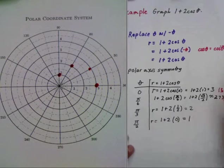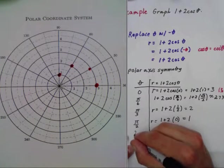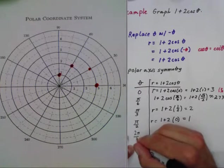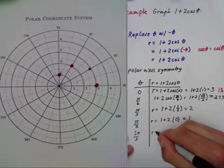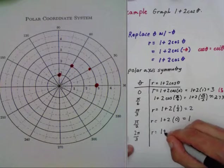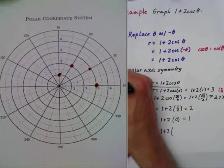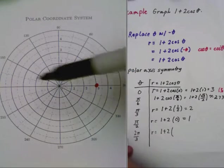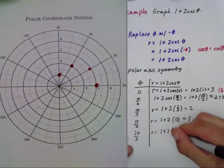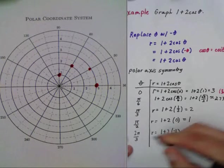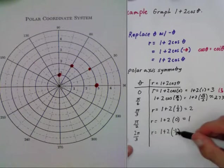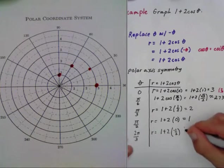Next is two pi over three. So r equals one plus two times, well, if pi over three is one half on the unit circle, two pi over three is in the second quadrant where cosine is negative. Cosine of two pi over three is negative one half, so I get zero.